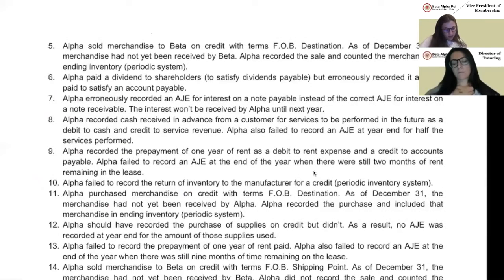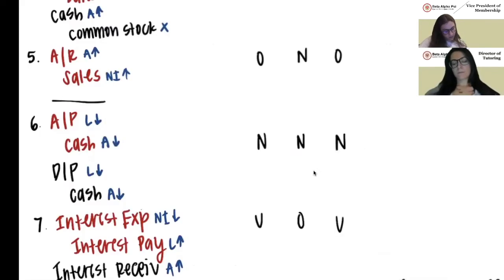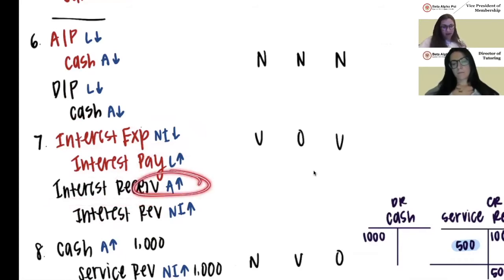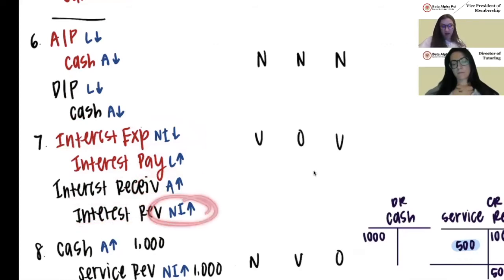Number seven: Alpha recorded an adjusting journal entry for interest on a note payable instead of the correct entry for interest on a note receivable. The interest won't be received until next year. They incorrectly debited interest expense, lowering net income, and credited interest payable, increasing liabilities. What they should have done was debit interest receivable, increasing assets, and credit interest revenue, increasing net income.